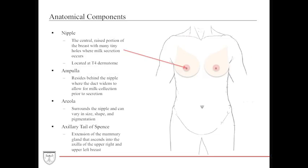The nipple is a very central raised portion and is the point of most maximal projection on the breast. It has many tiny holes where milk is actually secreted. Interestingly, the nipple areolar complex is located at the T4 dermatome, which is often tested. Underneath the nipple is a structure called the ampulla — a dilated sac right above the nipple where milk is housed prior to secretion.